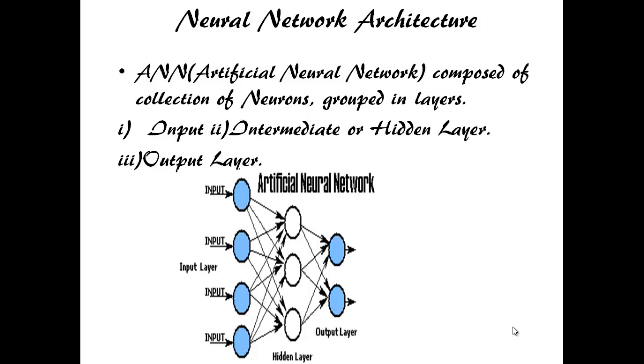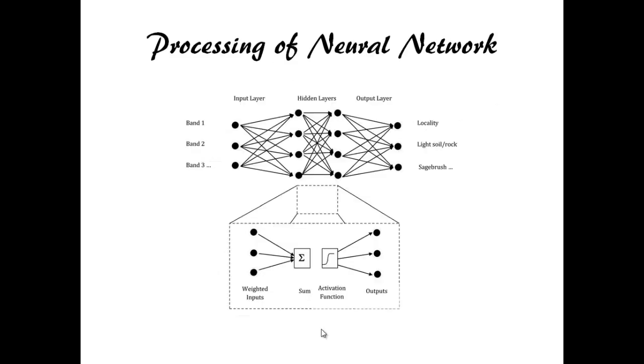When you look at the picture you can understand. Input layer gets the input, hidden layer processes it and output layer gives the output. Now we see in detail.